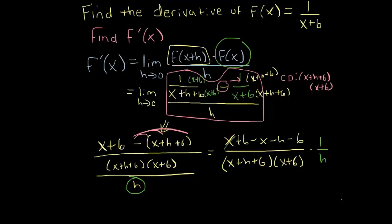But first, notice that x and minus x is 0, 6 and minus 6 is 0. And now all I have left is negative h on top, which is good because h divided by h is 1. And so I'm really just left with, don't forget this negative here, that's going to force there to be a negative 1 in the numerator there.